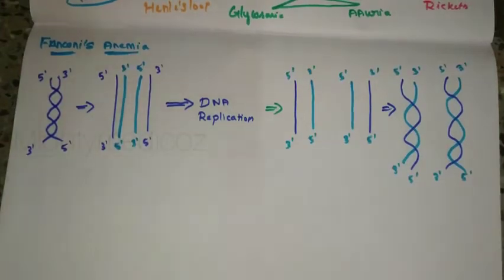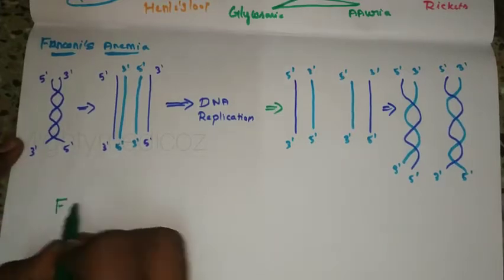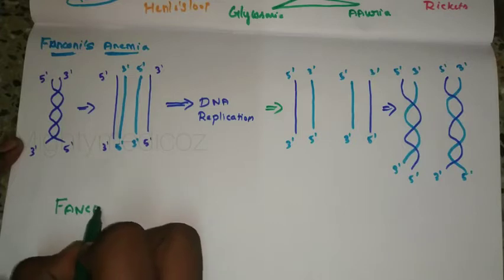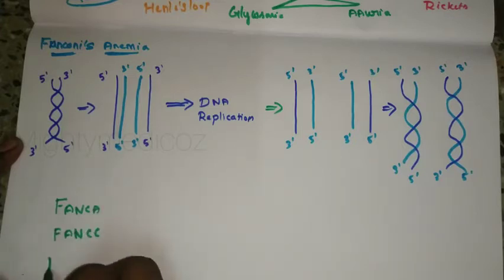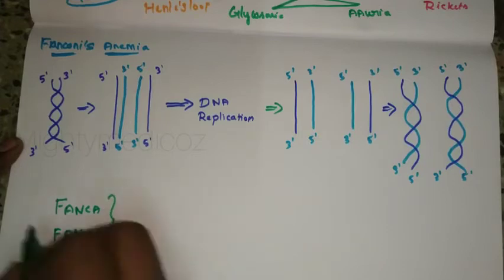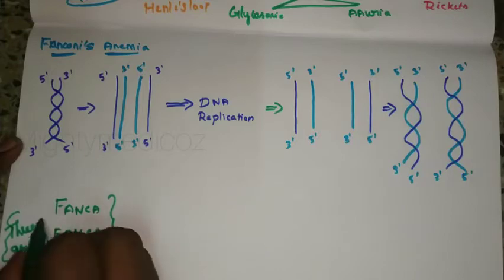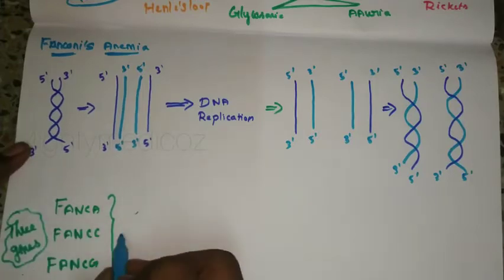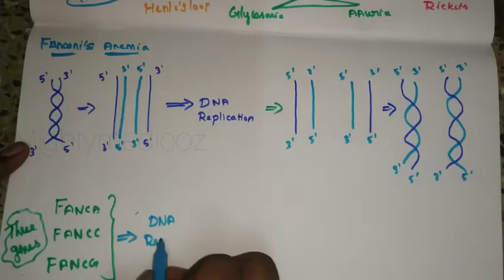In our body, there are a group of genes called Fanconi genes — three key genes in this family. These Fanconi genes play a critical role in a process called the DNA repair mechanism.